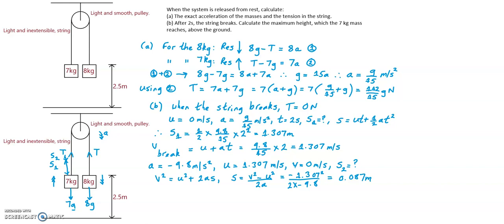Therefore H_max, the maximum height reached above the ground by the 7 kilogram mass, will be its initial position above the ground which was 2.5 meters, plus the distance travelled upwards before the string broke which is 1.307 meters, plus the very small distance it travelled upwards against gravity, 0.087 meters, which to three significant figures gives the maximum height above the ground of 3.89 meters.